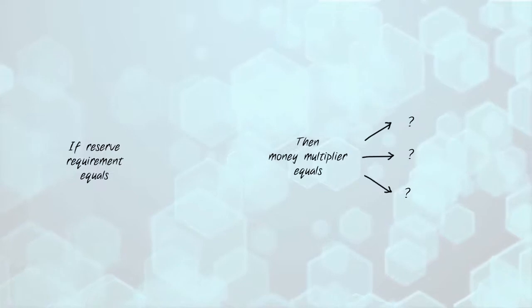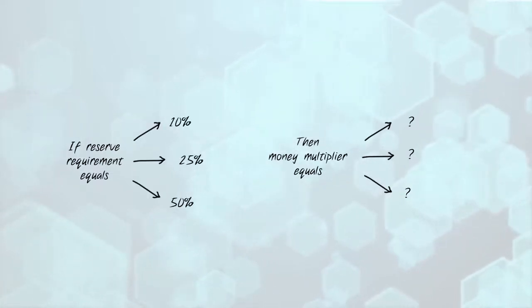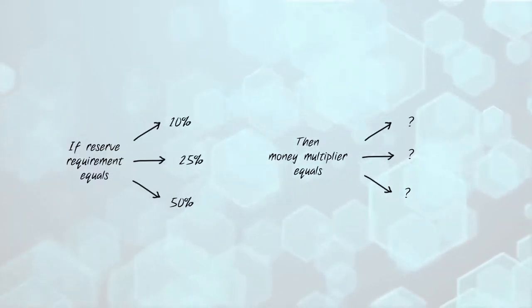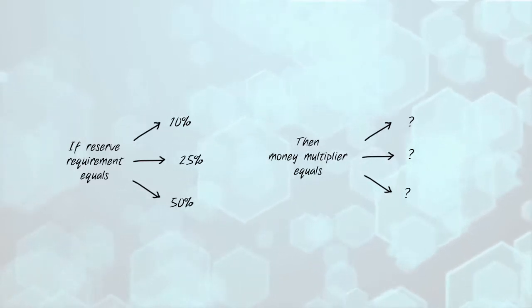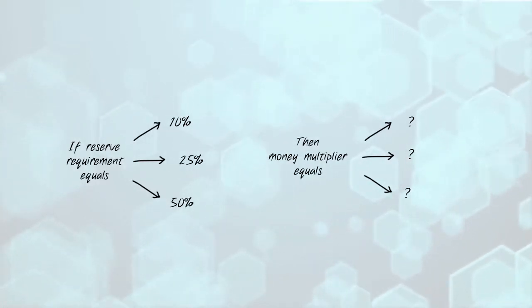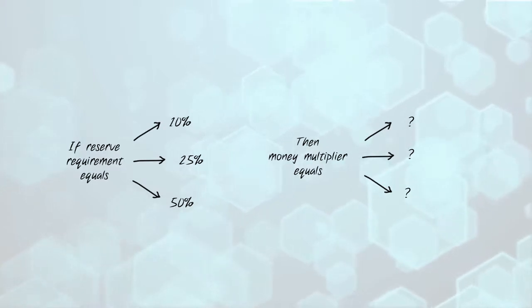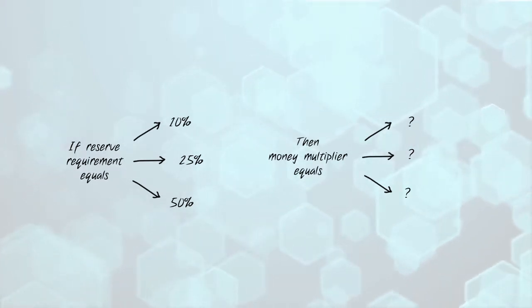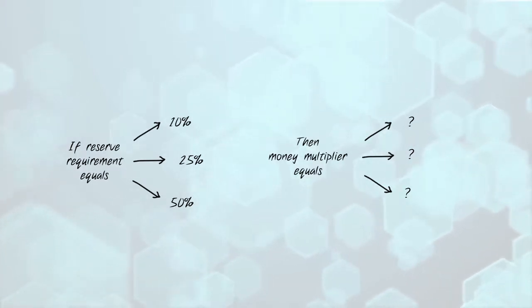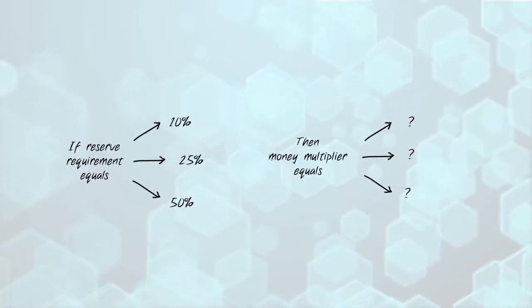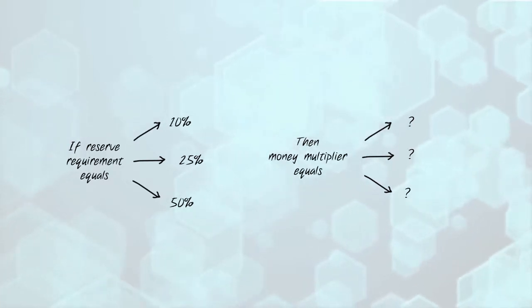So what's the money supply multiplier if the reserve requirement is 10%, 25%, and 50%? And what happens to the money supply multiplier as the reserve requirement rises? Take a minute now to jot down your answers and maybe also think about why your results should be very intuitive.